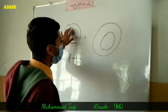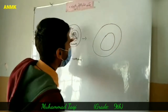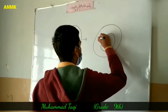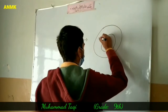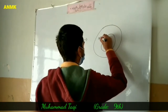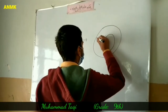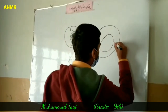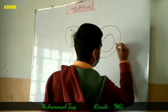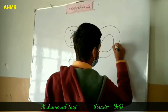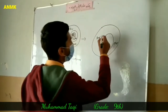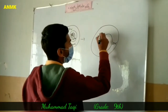Now, both centrosomes duplicate and as a result two daughter centrosomes are found. These centrosomes migrate to the opposite poles of the cell and give rise to microtubules which are used by joining.